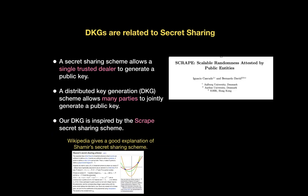Every DKG I know of is essentially a secret sharing scheme with many participants such that you don't have a single trusted dealer — you have many trusted dealers and when put together you get an MPC such that no single person needs to be trusted. A classic secret sharing scheme you would base a DKG on is the Feldman VSS. We are instead using the Scrape VSS, and this was really the scheme that inspired our final result.